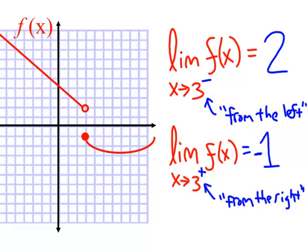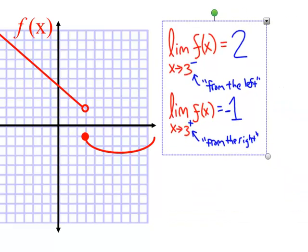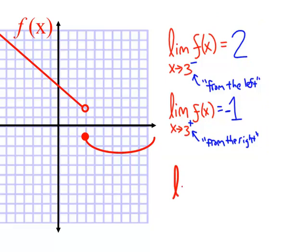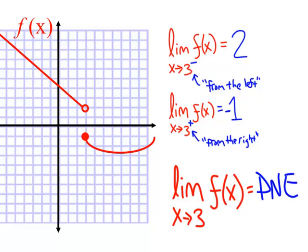So these are the one-sided limits. And we'll remind ourselves that if those two one-sided limits are different values as they are here, then that means that there is no two-sided limit. If I just put x approaches 3, and I don't say from the left or from the right, well, in this case, I have to put DNE does not exist because the value coming from the left is not the same as the value coming from the right. And that automatically means that the two-sided limit does not exist.